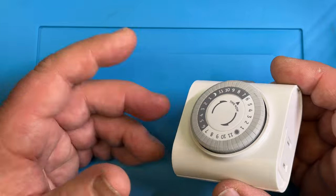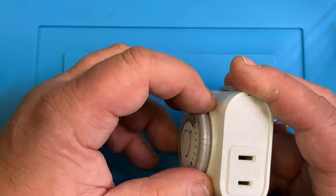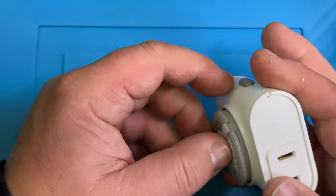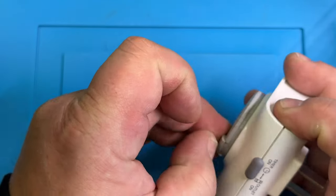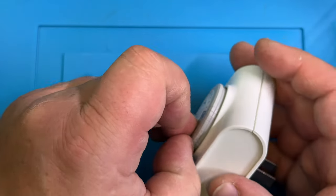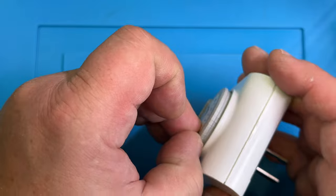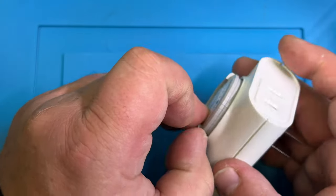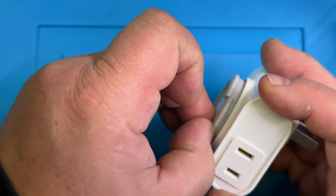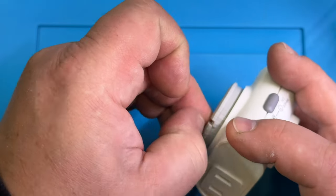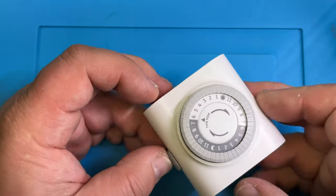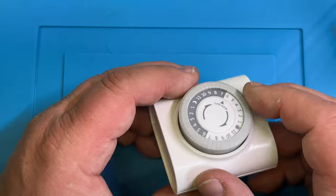If you want to set up your timer, it is easiest to pull out those pins before programming. So you go in here with your fingernail and pull all the pins out a little bit. You can hear them click. If you pull them all out, that means this timer will not turn on anything because they're all out.